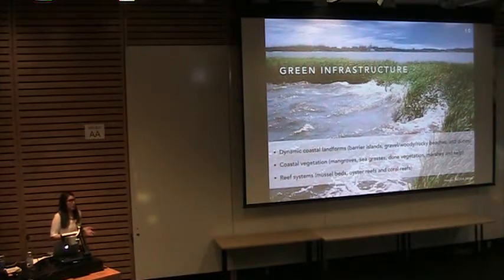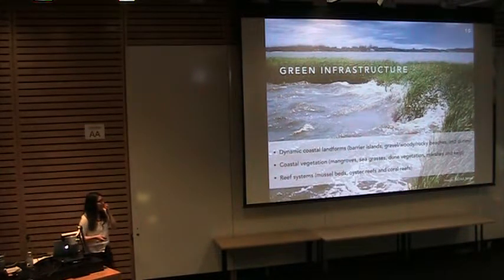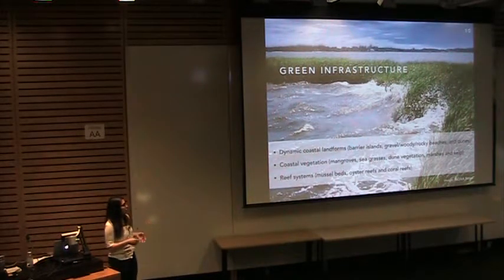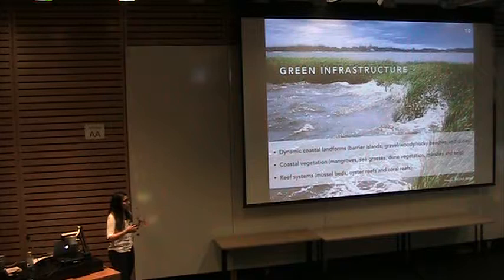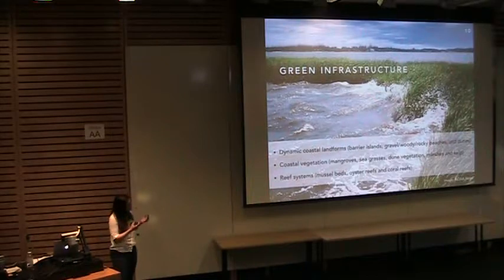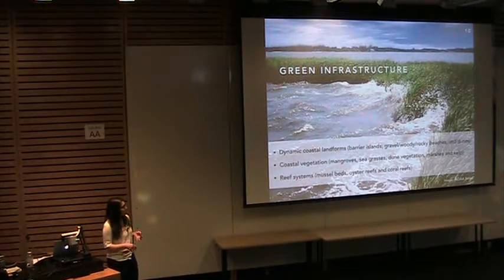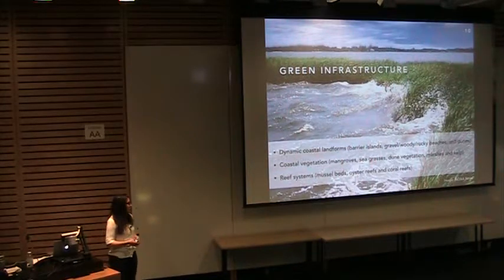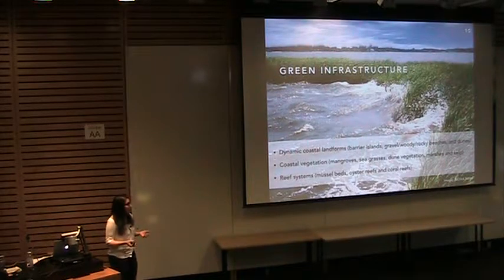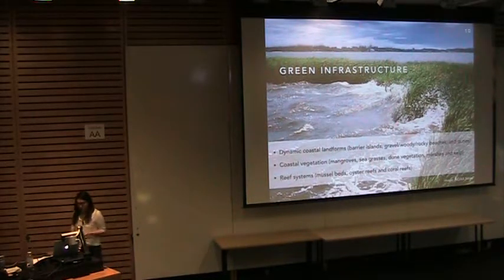What I mean by green infrastructure includes dynamic coastal landforms such as barrier islands, dune structures, or even gravel, woody, and rocky beaches that naturally exist at the coast, or coastal vegetation — not necessarily mangroves in this region, but seagrasses, dune vegetation, marshes, and even kelp forests — and also the reef systems that interact with waves at the coast, such as mussel beds, oyster reefs, and coral reefs.